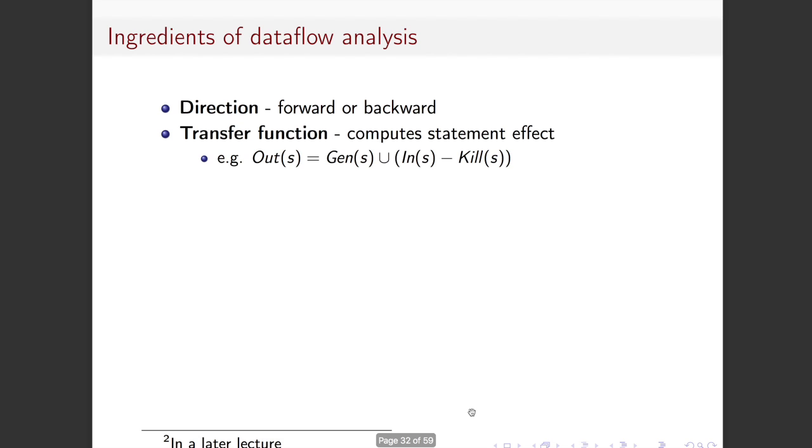All right. So we have a direction, we have a transfer function, which describes how the statement affects the information coming through it to change what's going on. And often this looks like this, right, Out(s) equals things that are generated union with the things that are coming in minus things that are killed. That's a typical format of this, although it will look different if it's a backwards one, because then you're defining In in terms of Out as opposed to Out in terms of In.